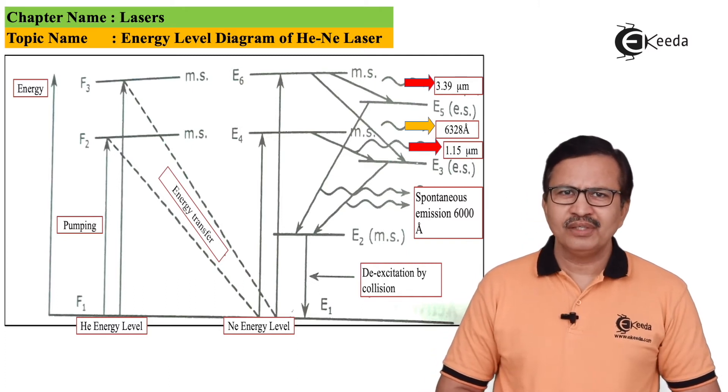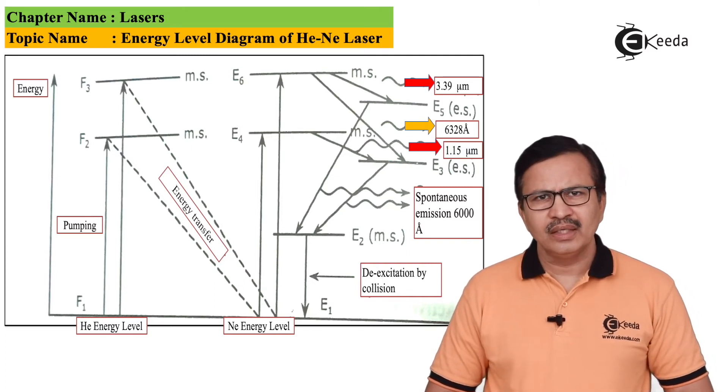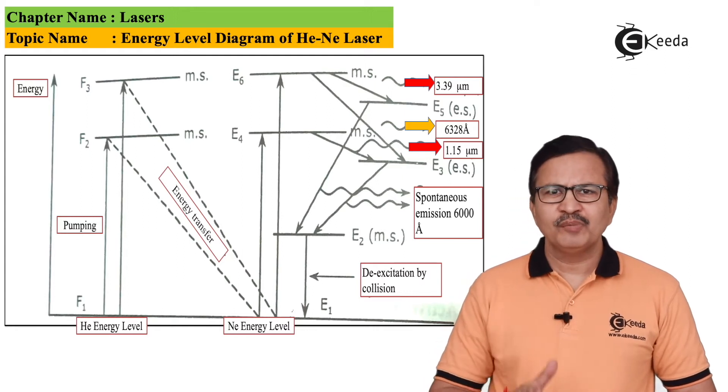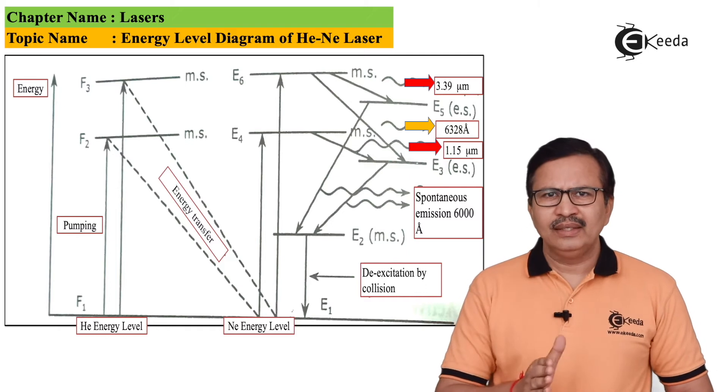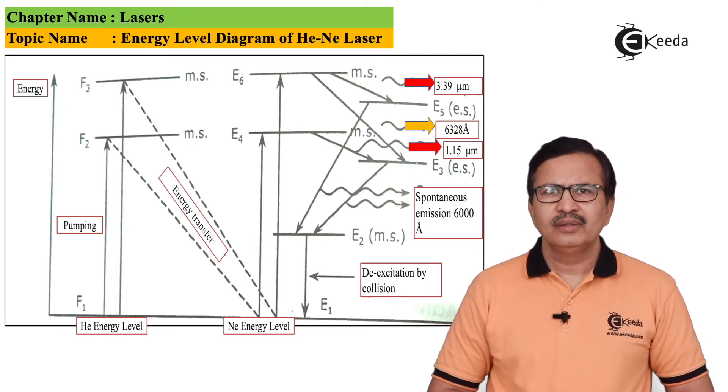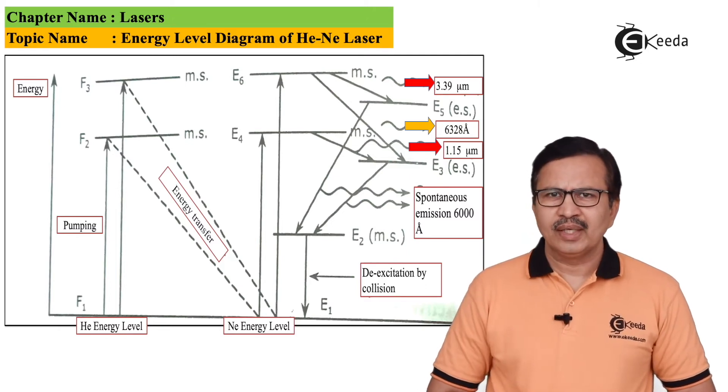Due to this, a population inversion occurs in the neon atoms. Once population inversion occurs, the conditions are conducive for stimulated emission.